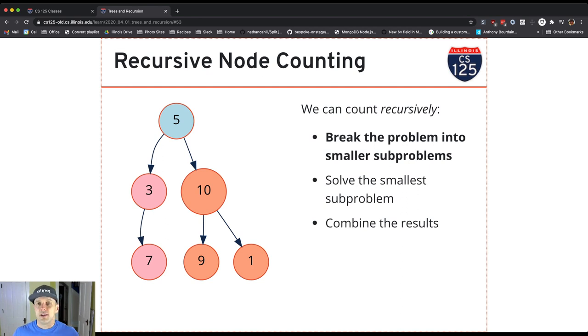And so essentially to count a tree I say, okay well the count of the nodes in the tree is one—I'm counting the node that I'm at—plus the number of nodes in my right subtree plus the number of nodes in my left subtree.